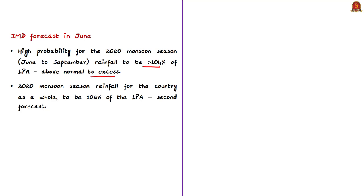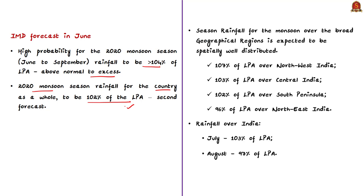A second forecast suggested that quantitatively the 2020 monsoon season rainfall for the country as a whole is likely to be 102% of the Long Period Average. The season rainfall was expected to be spatially well distributed: 107% of LPA for Northwest India, 103% for Central India, 102% for South Peninsula, and 96% for Northeast India.